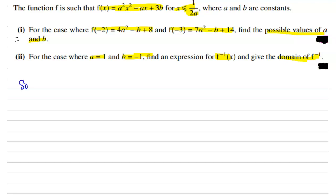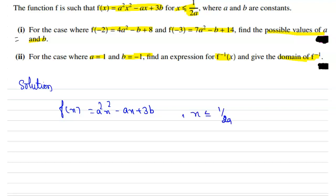Now move on to the solution. The given function is f(x) = a²x² - ax + 3b, where x is less than or equal to 1/(2a). We are given f(-2) = 4a² - b + 8 and f(-3) = 7a² - b + 14.